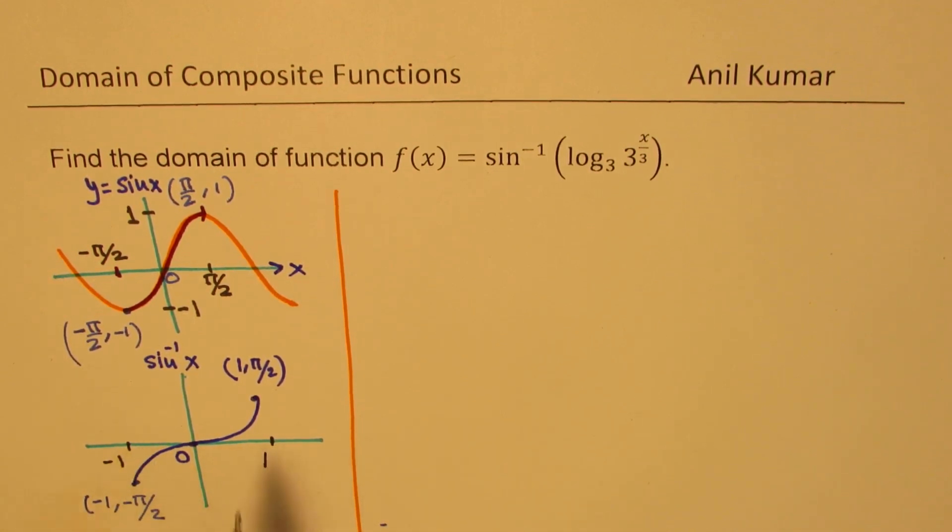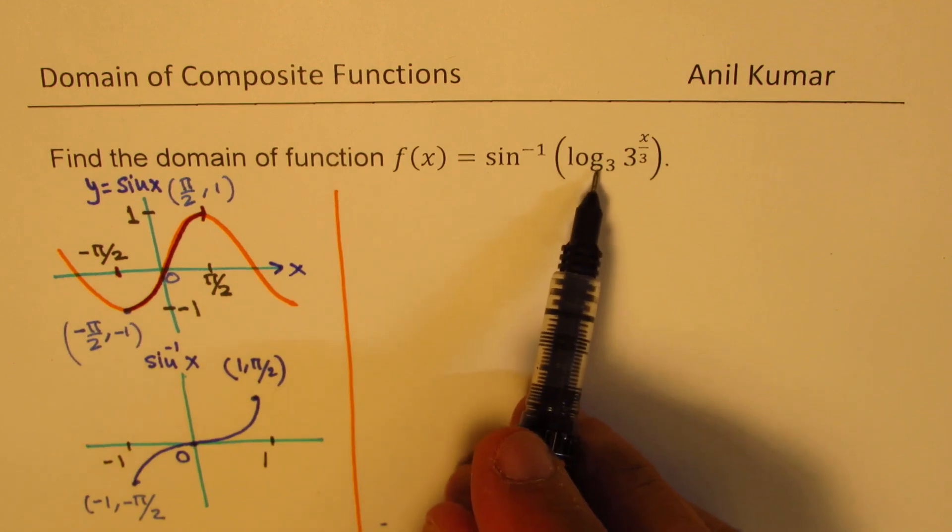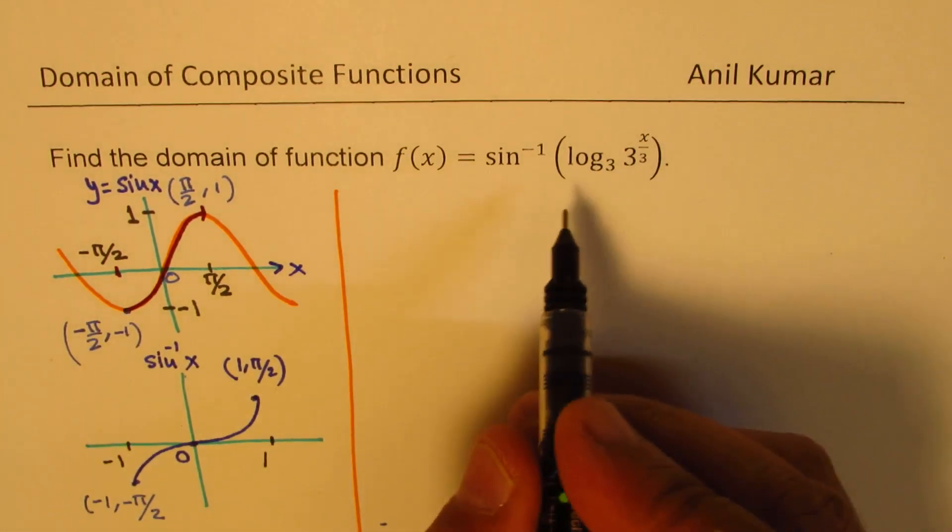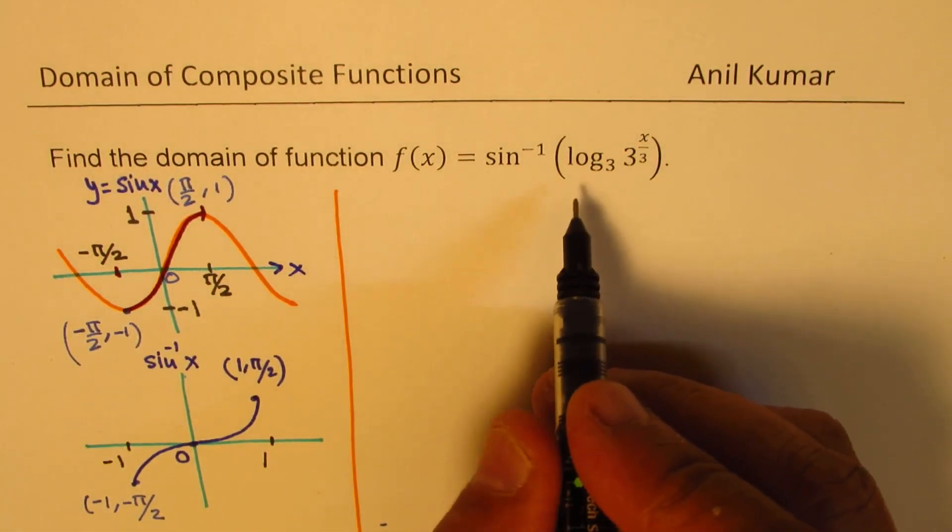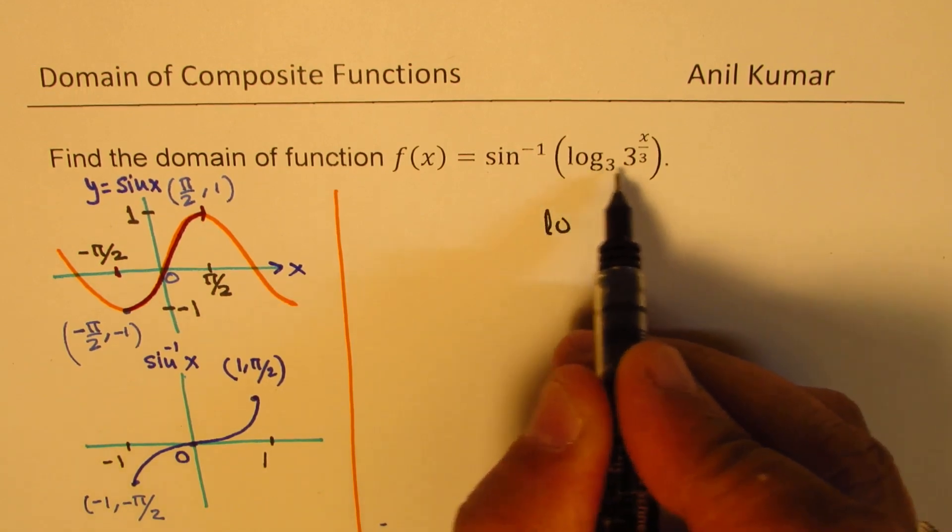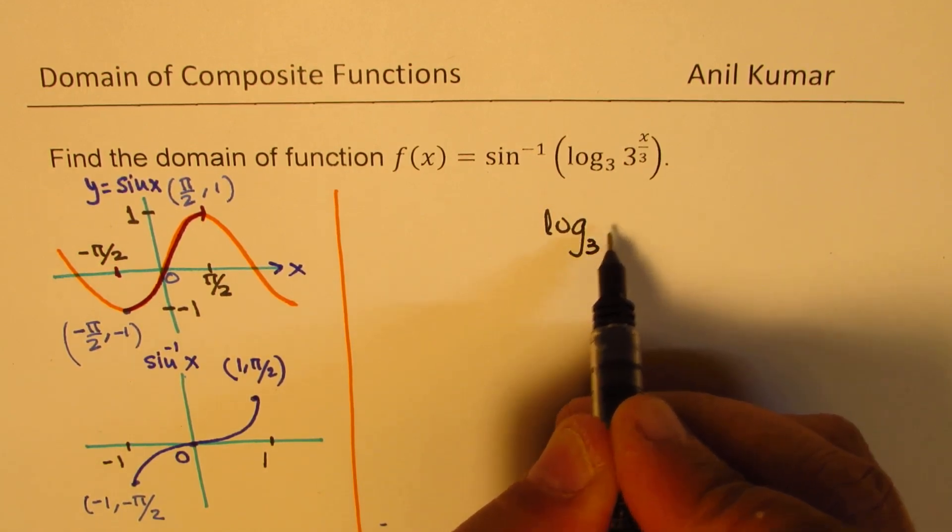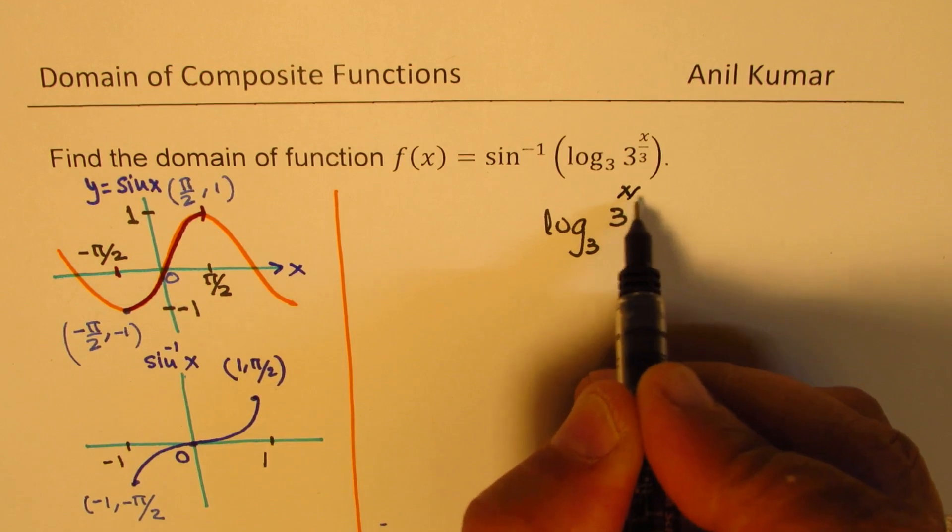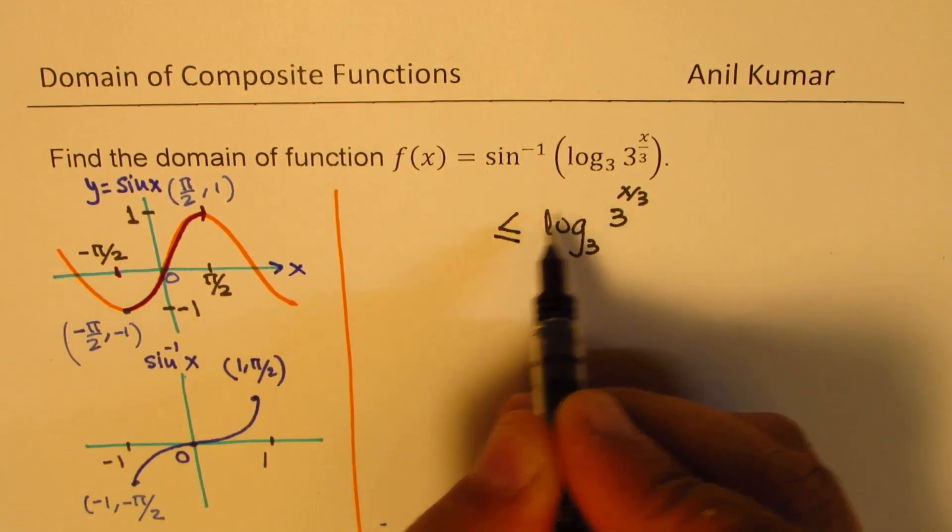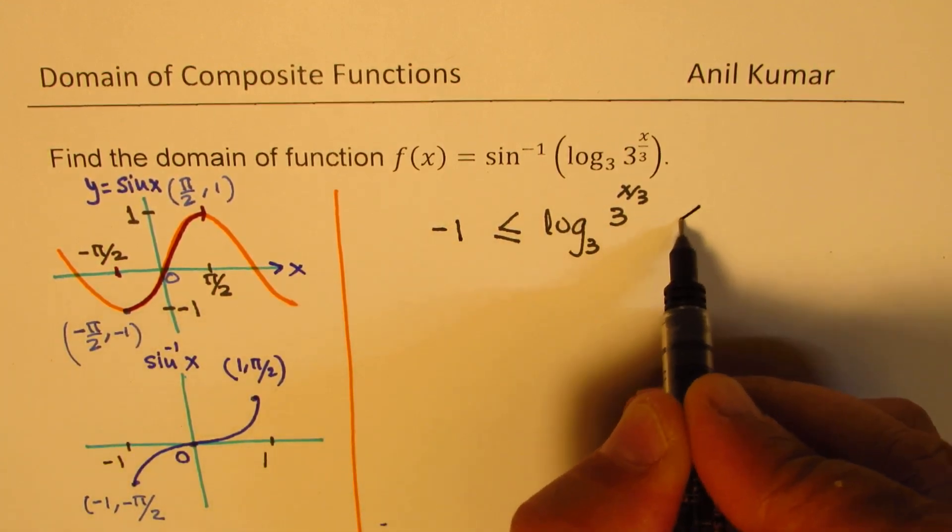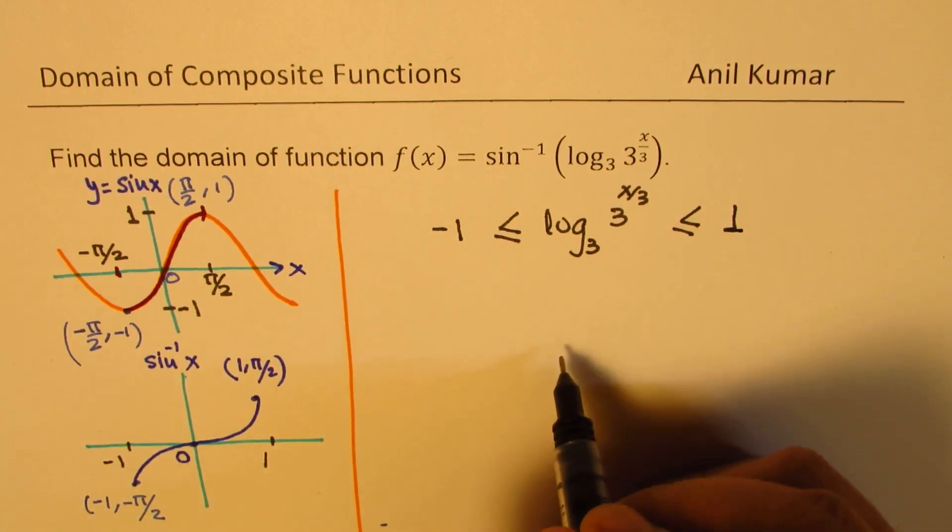So that is the domain of sin inverse function. So as far as the domain is concerned, we know that this value of log to the base 3 of 3 to the power of x over 3 should be greater than equal to minus 1 but less than equal to 1.